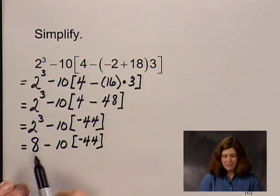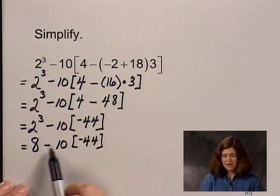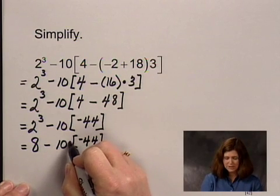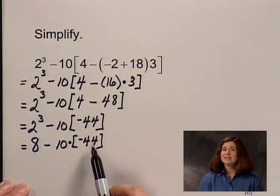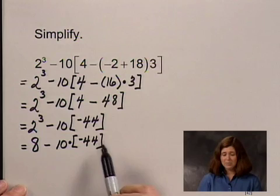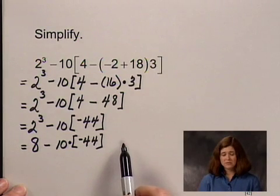And now we have a subtraction, and again we have a multiplication, and if it helps, write in the multiplication sign to remember that 10 times negative 44 is the next step we want to do. We want to perform all multiplications and divisions in order from left to right.